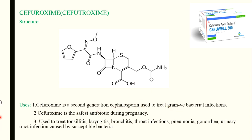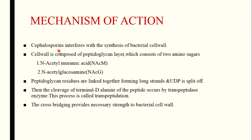Cefuroxime is a second generation cephalosporin also used to treat gram-negative bacterial infections. Cefuroxime is the safest antibiotic used during pregnancy — if bacterial infections occur in pregnant women, they can use cefuroxime. It is used to treat tonsillitis, laryngitis, bronchitis, throat infections, pneumonia, gonorrhea, and urinary tract infections caused by susceptible bacteria. Cefuroxime is available in tablet form.